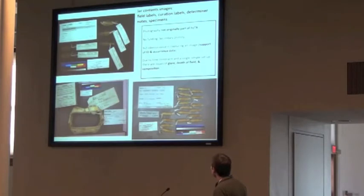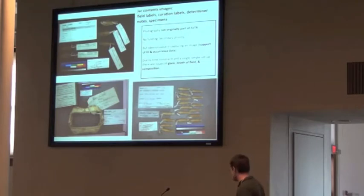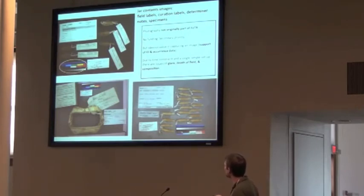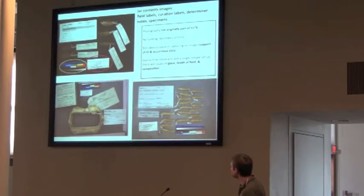Due to time constraints, we're using a really simple single setup. We have issues of glare, depth of field, a little bit of blurriness, and compositions are sometimes a little piecey. Every image has a color bar and a measuring stick, the Fishes of Texas ID label, which tells you our determination for species, who determined it, the date, and the institution in California.